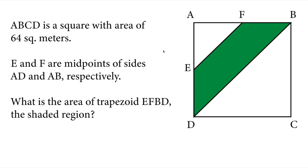Let's read the question. ABCD is a square with area of 64 square meters. E and F are midpoints of sides AD and AB respectively.